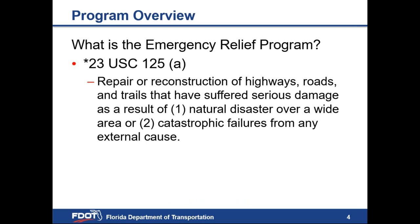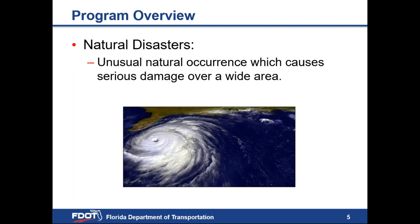So, what is the ER program? Per 23 U.S. Code 125A, the ER program provides for the repair or reconstruction of highways, roads, and trails that have suffered serious damage as a result of a natural disaster over a wide area, or catastrophic failures from any external cause. Natural disasters are defined as an unusual natural occurrence which causes serious damage over a wide area. In Florida, we immediately think of hurricanes. However, ER is not just limited to hurricanes.